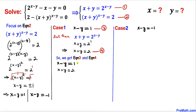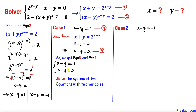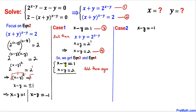I have copied down equations three and four. We are going to solve this system of two equations using the elimination method. Adding the two equations, the −y and +y cancel each other out, so we get 2x = 3, meaning x = 3/2.